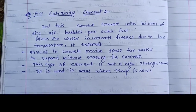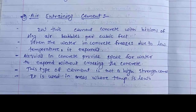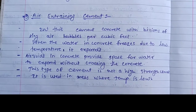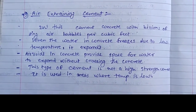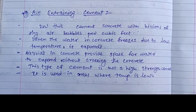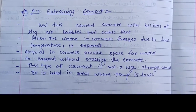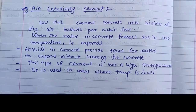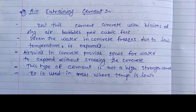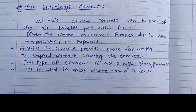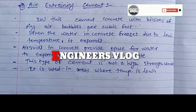Air entraining cement introduces billions of tiny air bubbles per cubic foot of concrete. When water in concrete freezes due to low temperature it expands, and the air bubbles provide space for the water to expand without cracking the concrete. This type of cement is not a high strength cement and is used in areas where temperature is low.